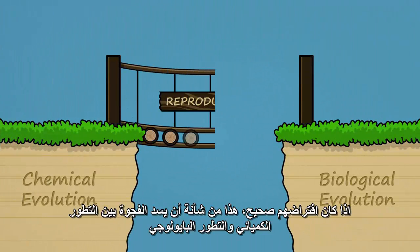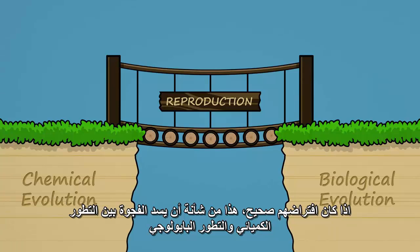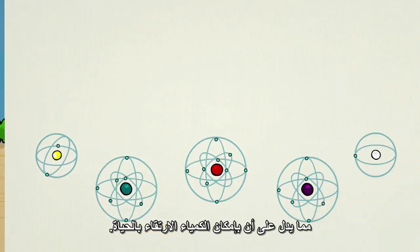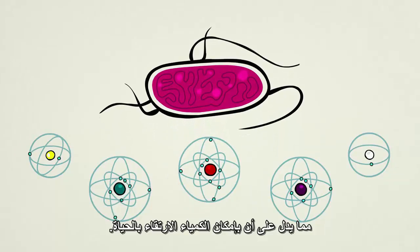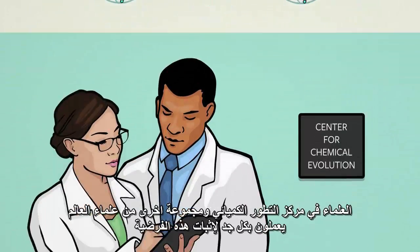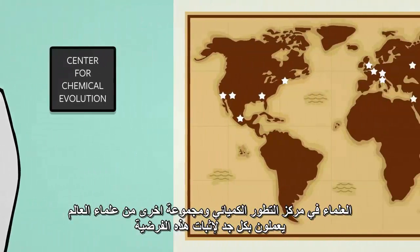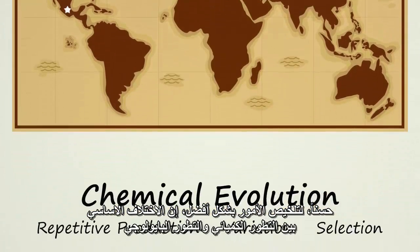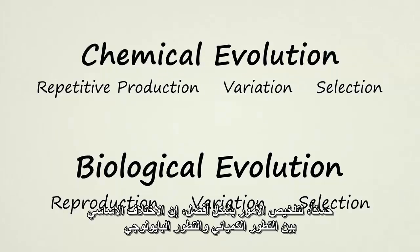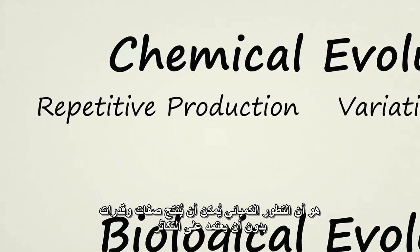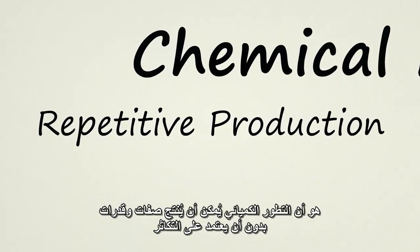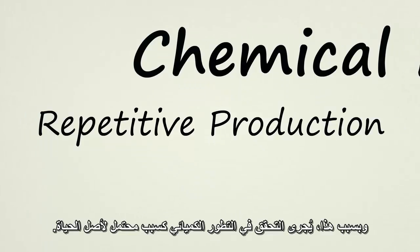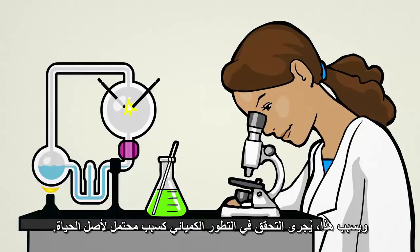If they are correct, this would bridge the gap between chemical evolution and biological evolution, demonstrating that chemistry can indeed give rise to life. Scientists at the Center for Chemical Evolution and other research groups around the globe are working hard to test this hypothesis. To sum things up, the main difference between chemical evolution and biological evolution is that chemical evolution can produce new characteristics and abilities without depending on reproduction. Because of this, chemical evolution is being investigated as a possible cause for the origin of life.